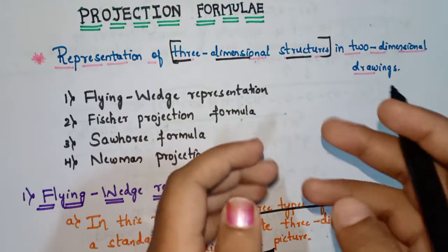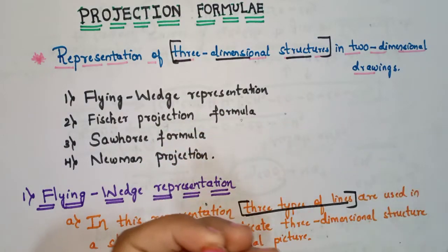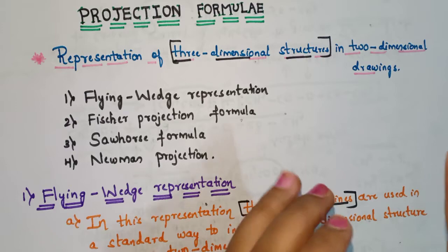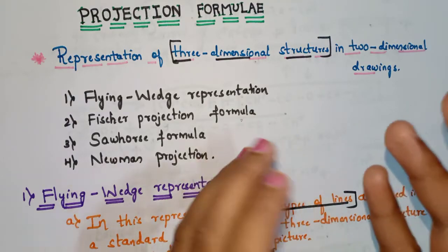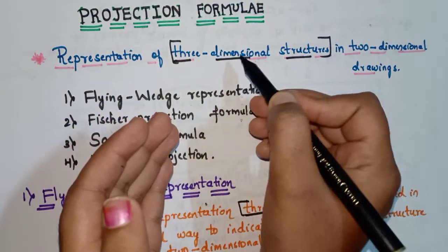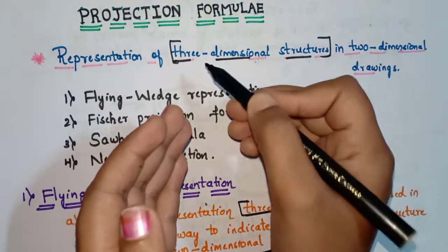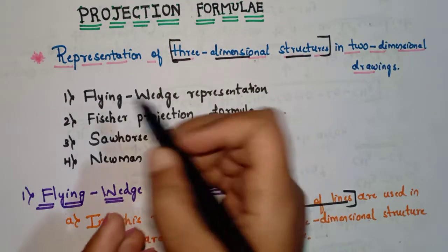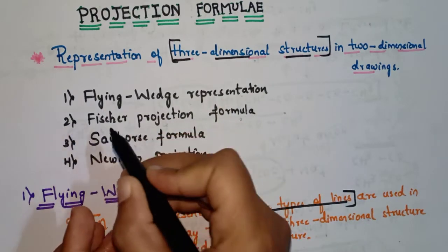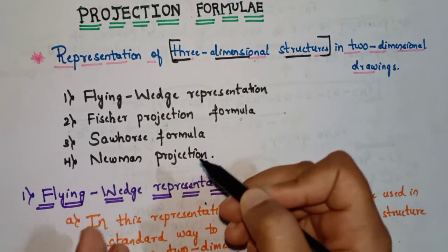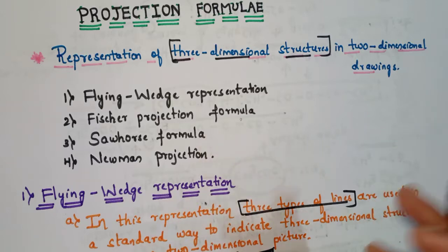Hello everyone, welcome back to our channel. In this video we are going to discuss about projection formulas. In projection formulas we represent three-dimensional structures in two-dimensional drawings. There are four types: the first is flying wedge representation, second is Fischer projection formula, third is Sawhorse formula, and fourth is Newman projection.